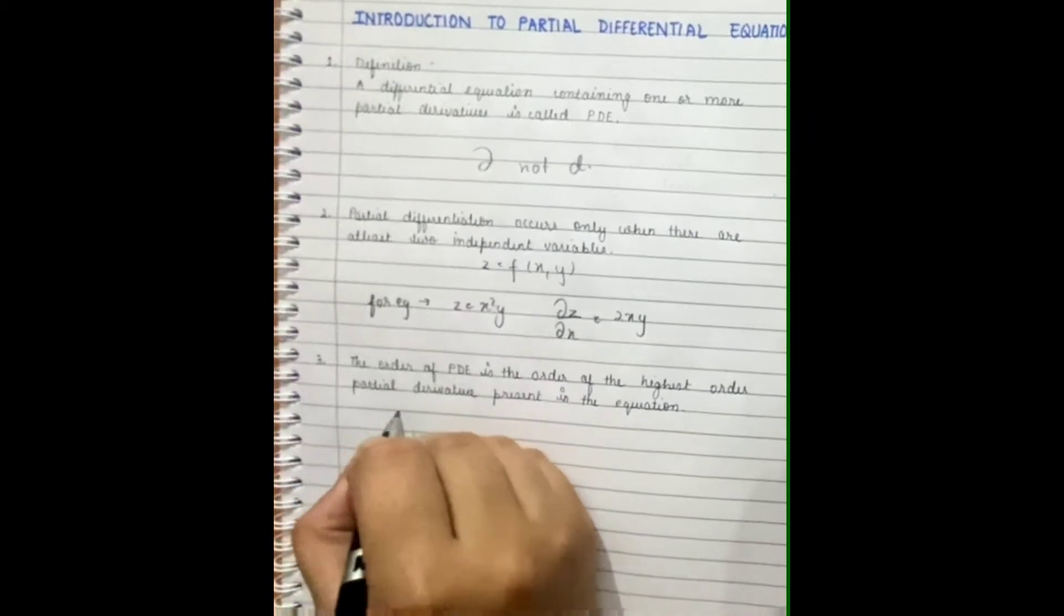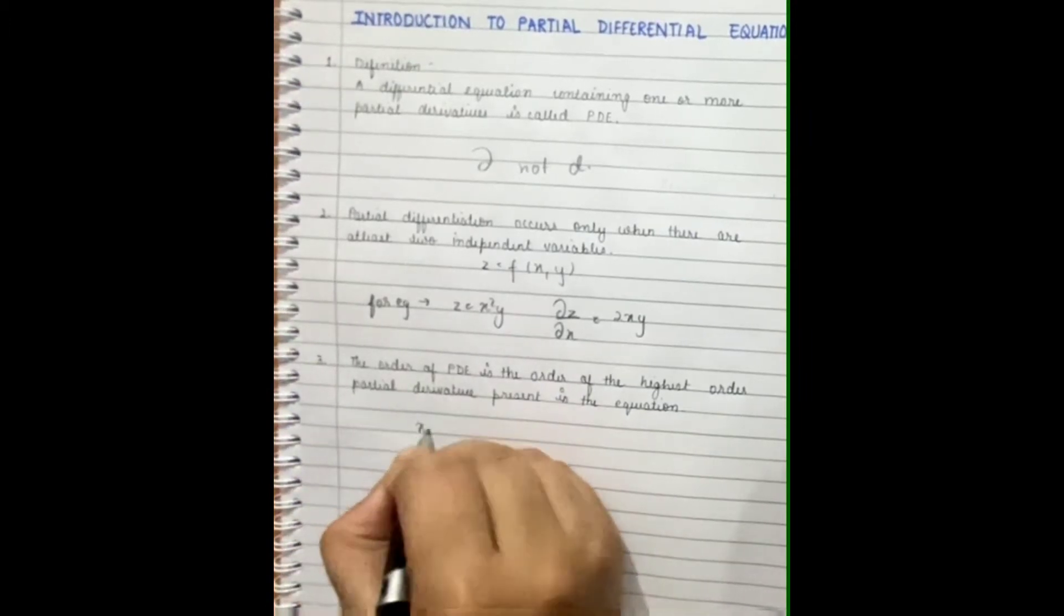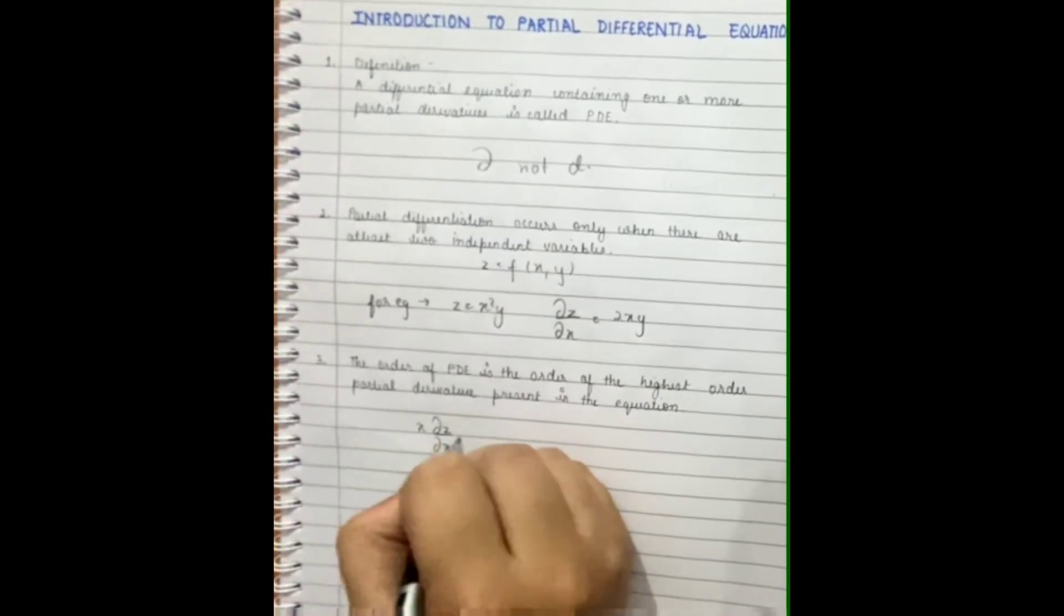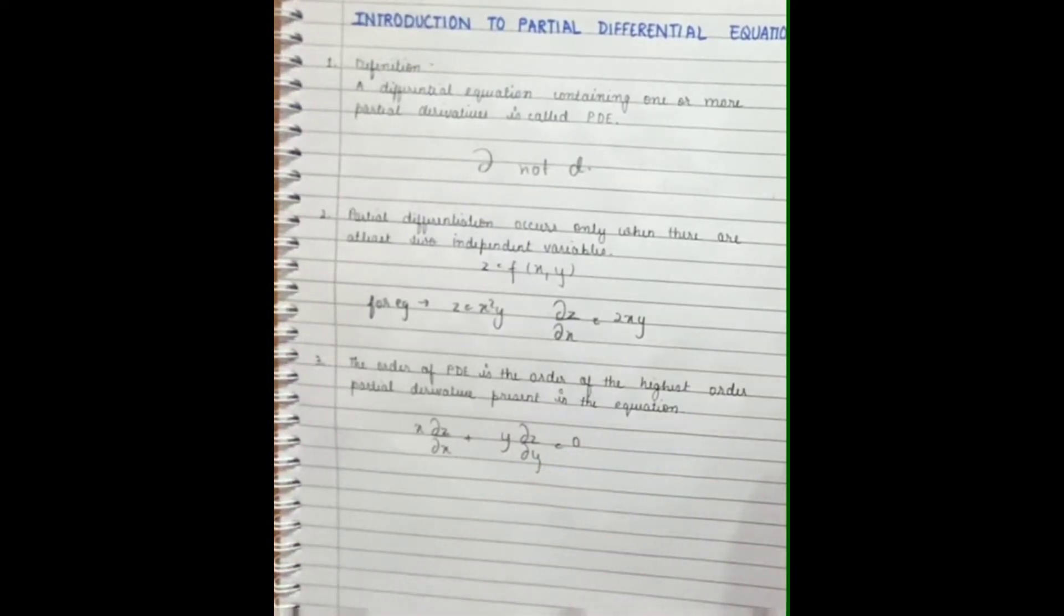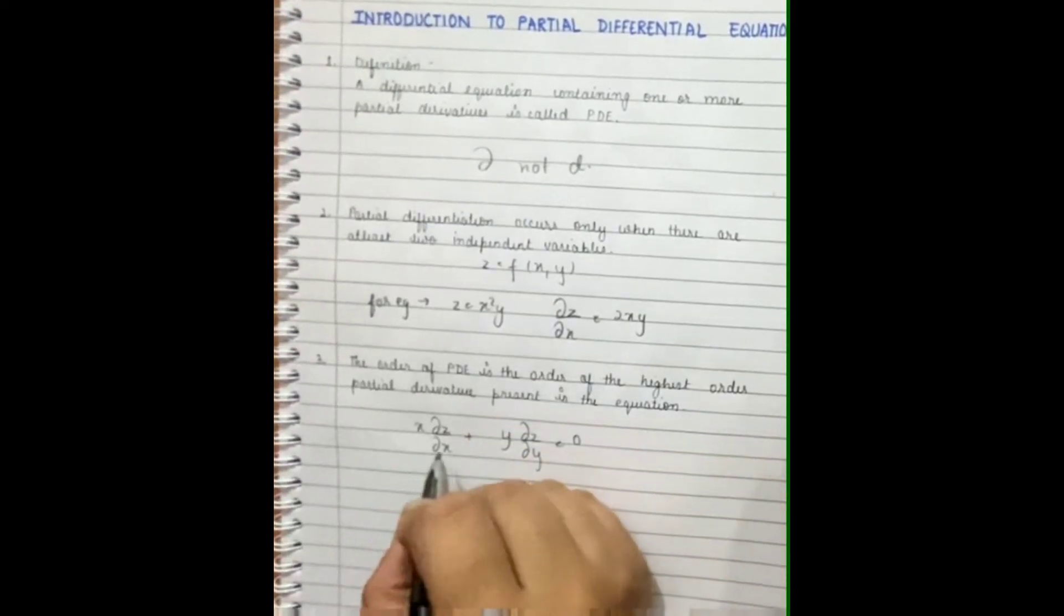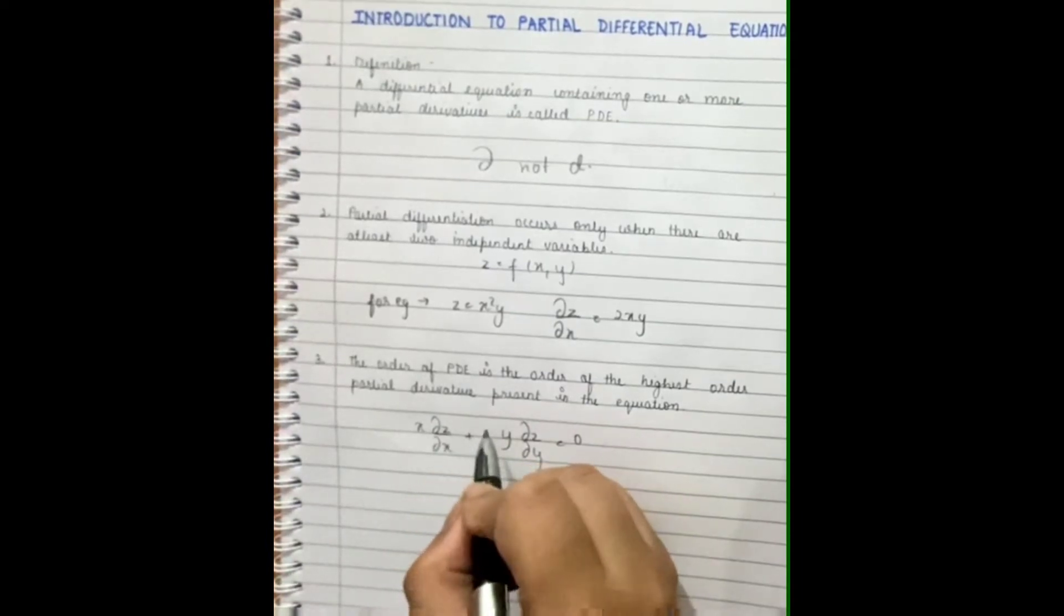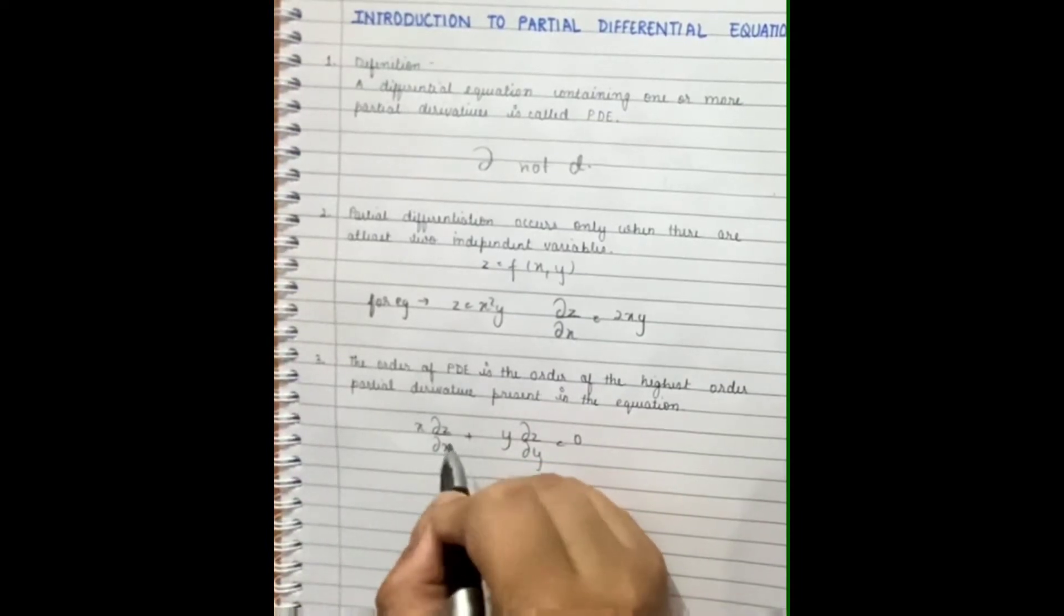To know this, let's look at another example. If we say that X del Z by del X plus Y del Z by del Y is equal to zero, the order of this equation is one because Z is partially differentiated with respect to X only once, and same goes with this equation also.